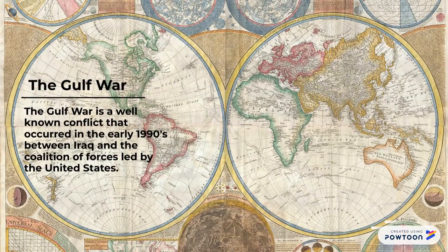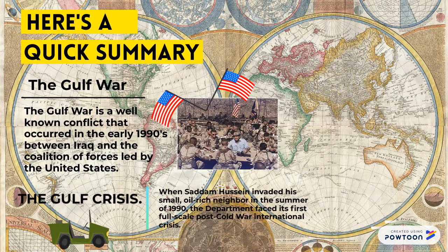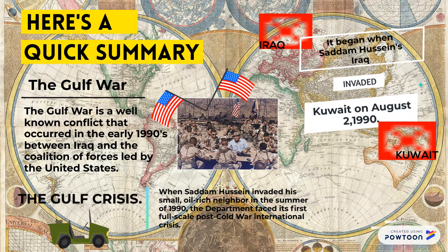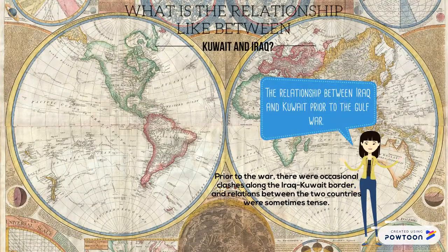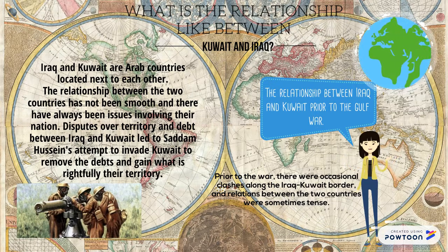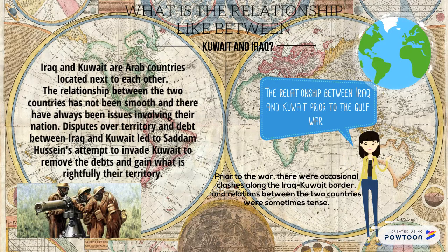The Gulf War is a well-known conflict that occurred in the early 1990s between Iraq and the Coalition of Forces of the United States. It began when Saddam Hussein's Iraq invaded Kuwait on August 2, 1990. Prior to the war, there were occasional clashes along the Iraq and Kuwait border, and relations between the two countries were sometimes tense. Disputes over territory and debt between Iraq and Kuwait led to Saddam Hussein's attempt to invade Kuwait to remove the debts and gain what he considered their rightful territory.